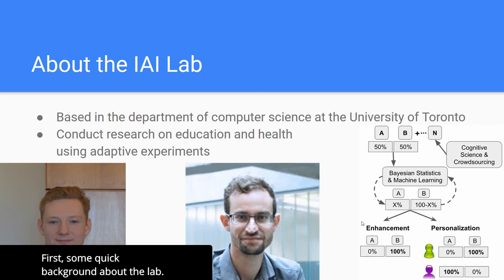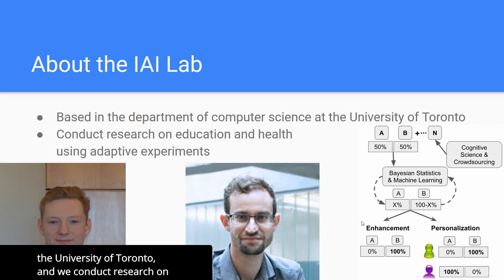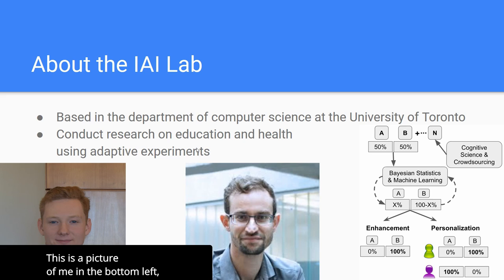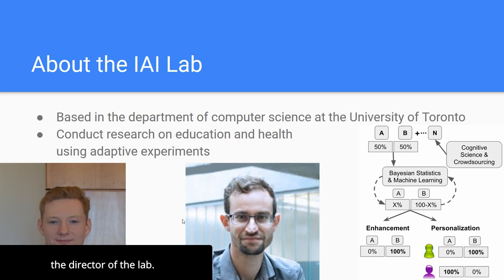First, some quick background about the lab. We're based at the Department of Computer Science at the University of Toronto, and we conduct research on education and health using adaptive experiments. This is a picture of me in the bottom left, and in the middle is Professor Joseph J. Williams, the director of the lab.